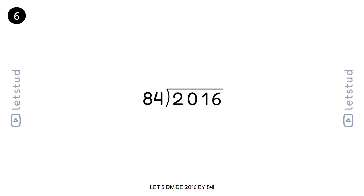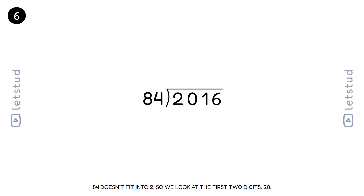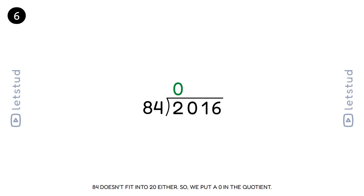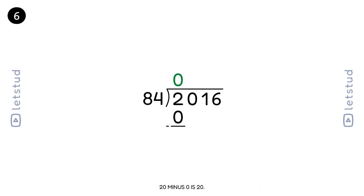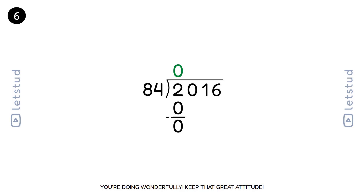Let's divide 2016 by 84. We start with the digit 2. 84 doesn't fit into 2, so we look at the first two digits, 20. 84 doesn't fit into 20 either, so we put a 0 in the quotient. 20 minus 0 is 20.